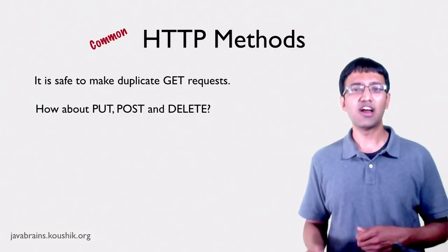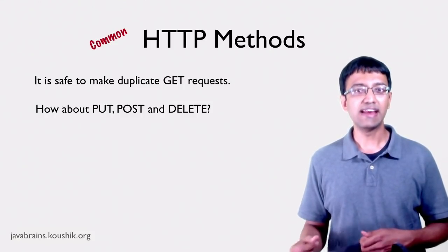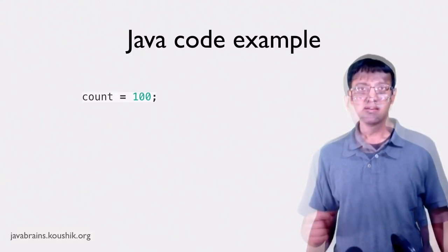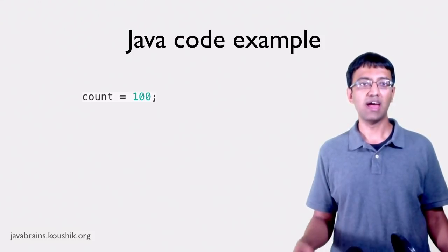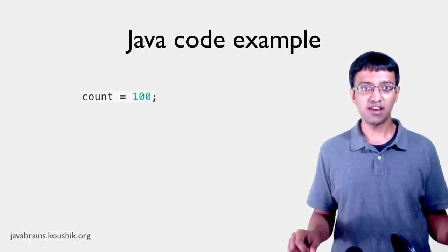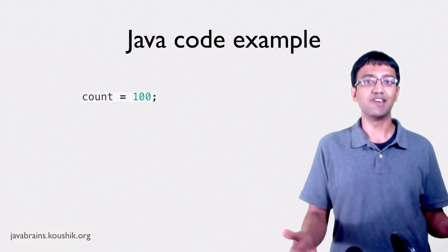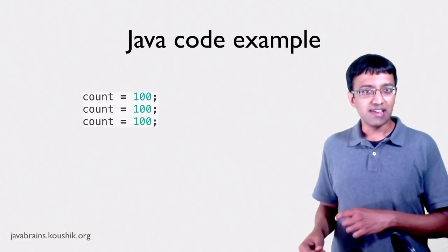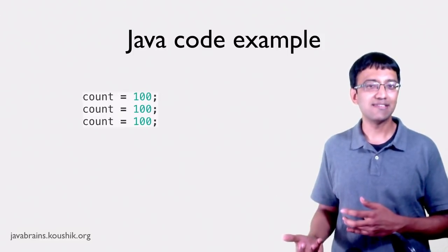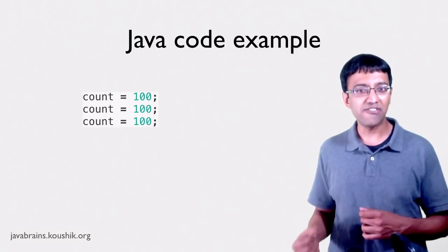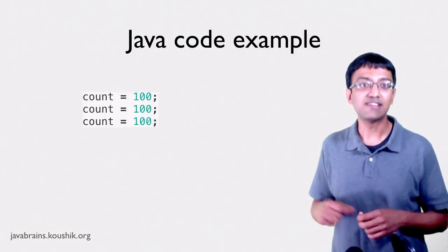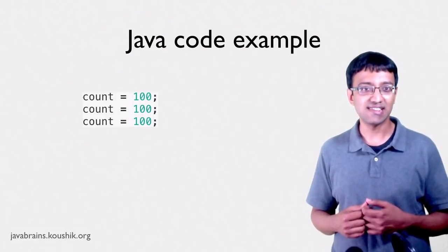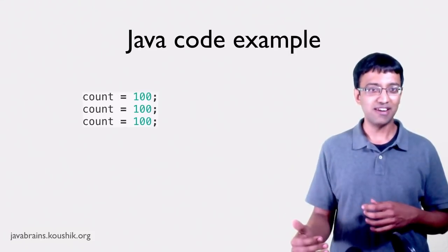Just because an operation is not read-only doesn't automatically mean that it cannot be duplicated. Take for example this piece of Java code — an assignment statement. Assume that COUNT is an integer variable. Assigning the value 100 to COUNT is definitely not a read-only operation. But if you were to repeat this operation three times, lines 2 and 3 don't really have any effect. You can repeat it a hundred times and the value of COUNT will still be 100.